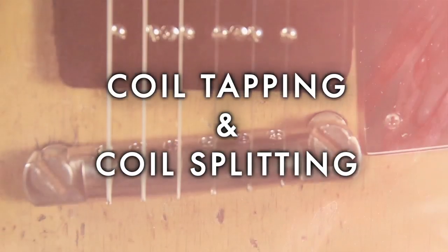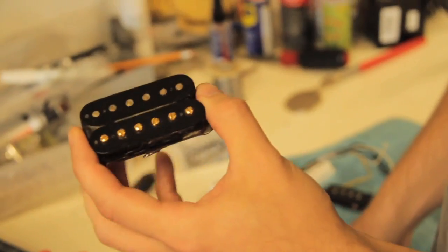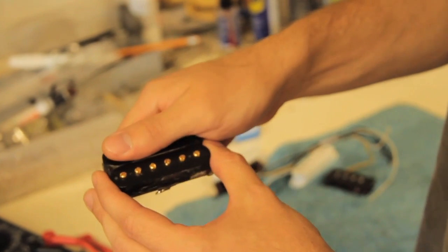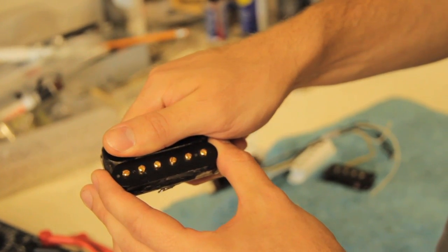A lot of people don't realize the difference between coil tapping and coil splitting. A lot of the time, coil tapping has become a generic term used to describe both, even though they're not the same. Coil splitting is the act of turning one pickup off and using your humbucker as a single coil.